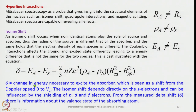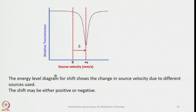The isomer shift δ is the change in energy necessary to excite the absorber, seen as a shift from Doppler speed 0 to V₁. The isomer shift depends directly on S electrons, which are very close to the nucleus and can be influenced by shielding from P, D, and F electrons. From the measured δ shift, information about the valence state of the absorbing atom is obtained. The energy level diagram shows the shift may be either positive or negative.